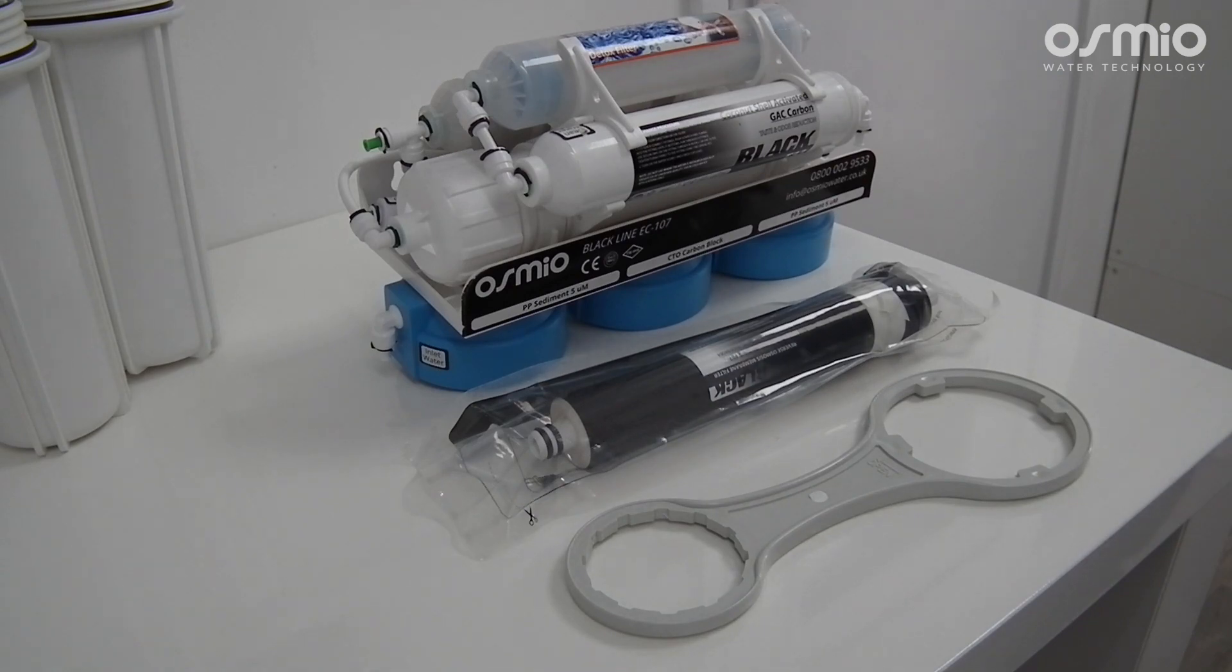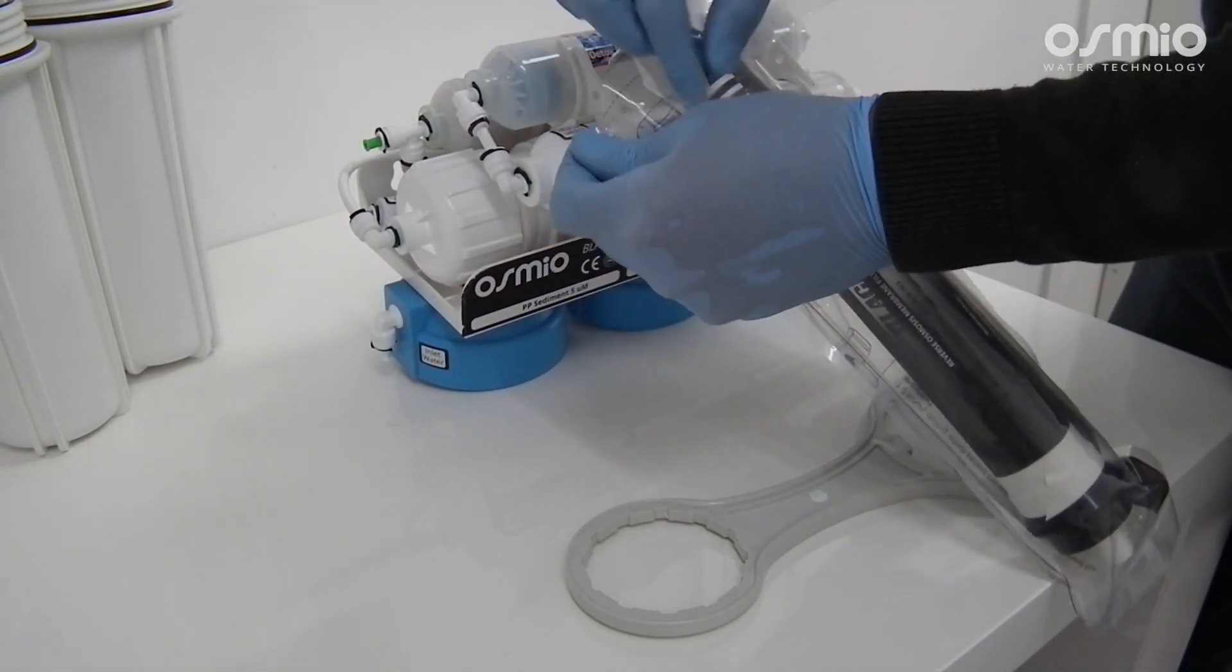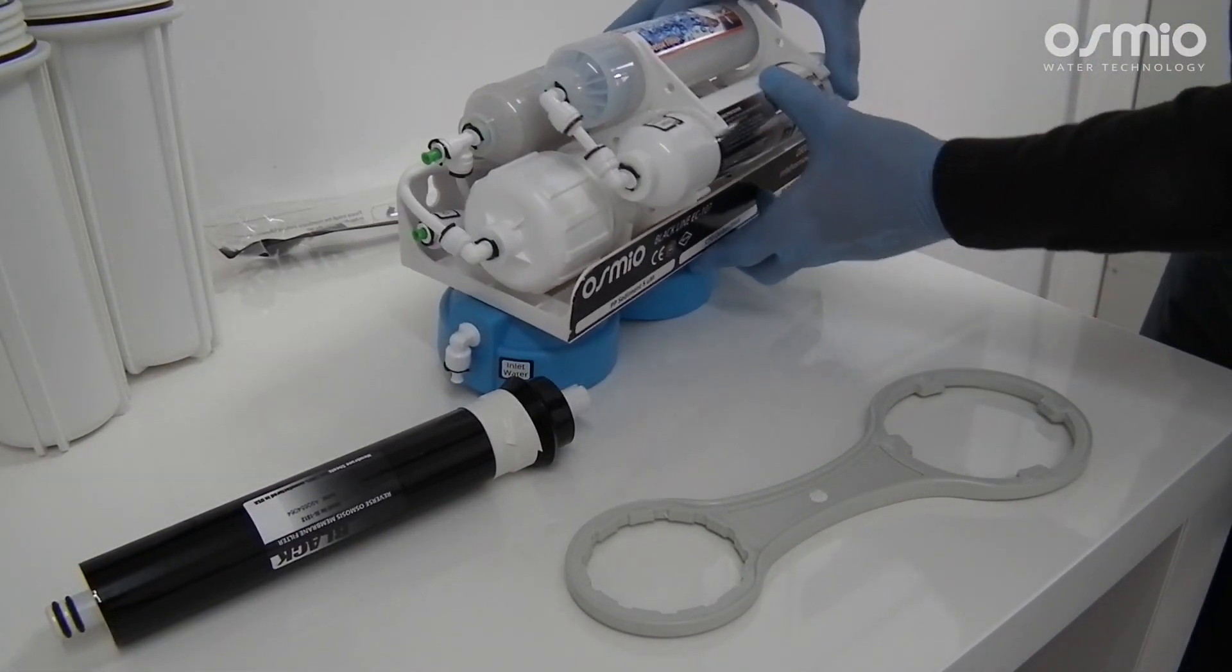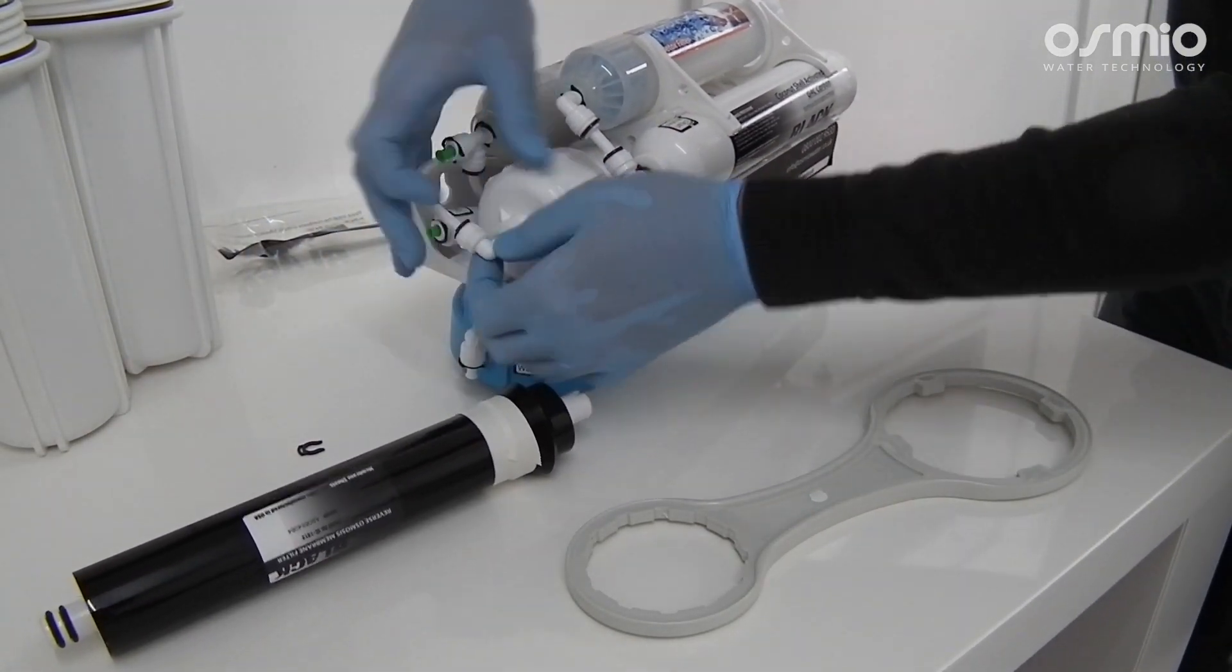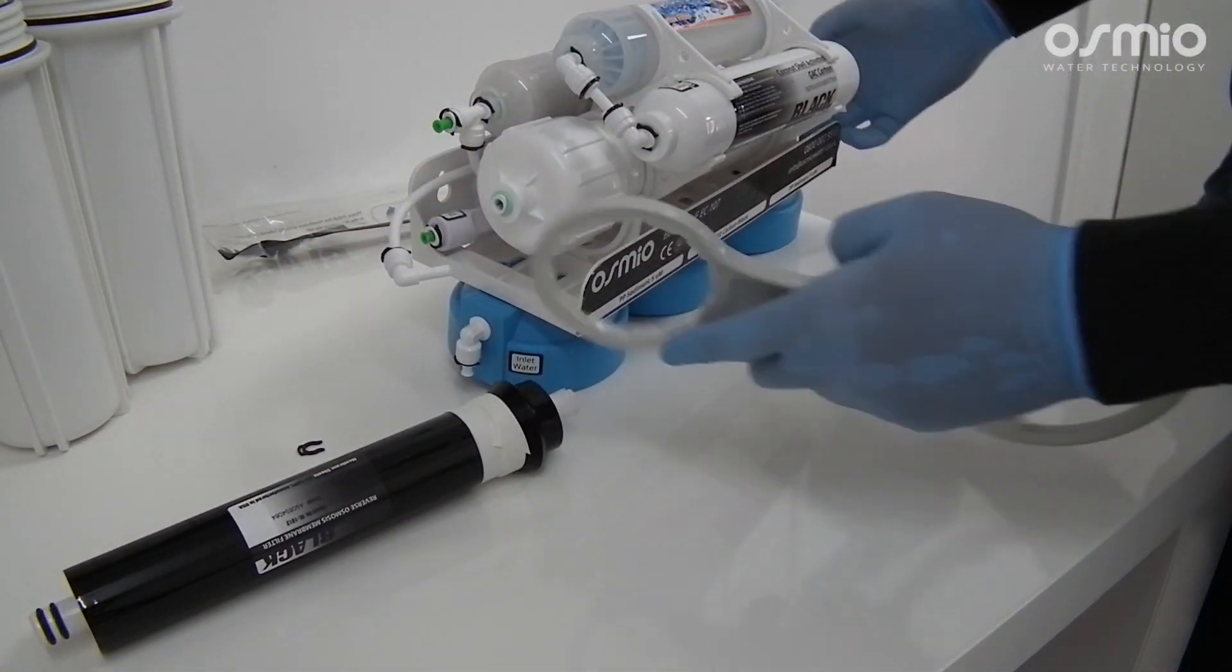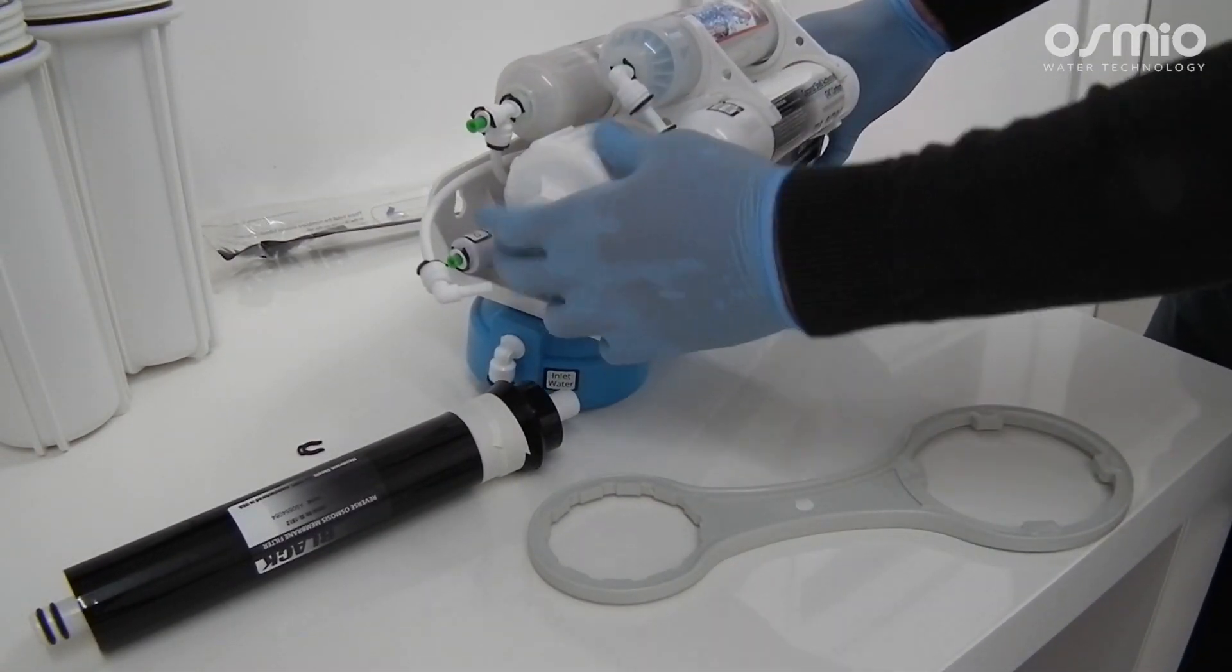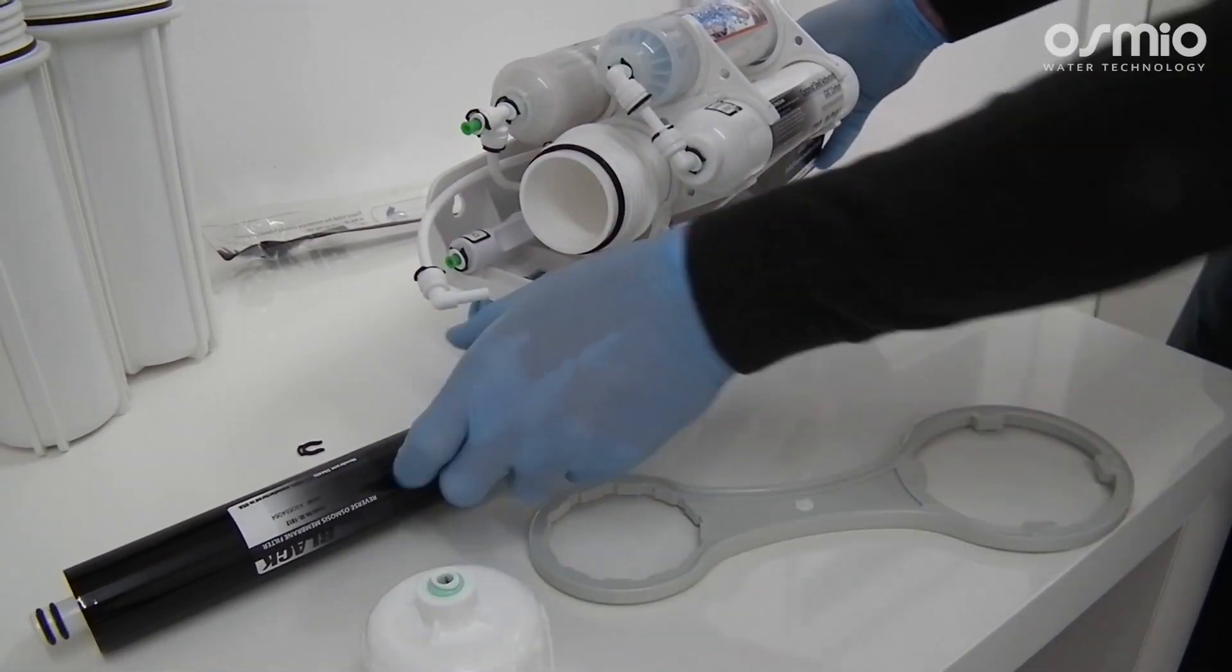For the next step we will fit all the filters that need to be in place before we run the system for the first time. Remove the elbow fitting from the membrane cap to be able to open the membrane housing. First remove the clip, push in the collet and remove the elbow. Then use the narrow side of the wrench to untighten the membrane cap and open it.